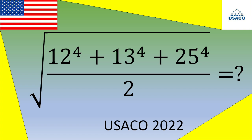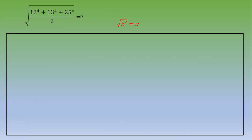Let's see the solution. We would like to calculate this quantity. We've got only positive terms, so the goal is to transform this quantity into a perfect square. That way we obtain the square root of x squared, and because this is a positive value, we end up with x. The second thing to notice is that we have three terms, and 12 plus 13 equals 25.